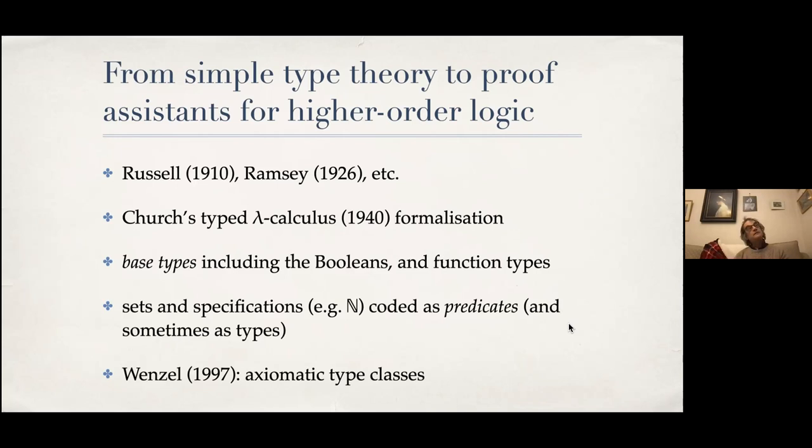For Church, you would definitely have a set of natural numbers, not a type of natural numbers, and so on for other things you would construct. These days we do a lot of sophisticated things with types, even in simple type theory. We have axiomatic type classes, which you can do a lot of clever things with, but I won't say anything about them here because we're not going to use them.